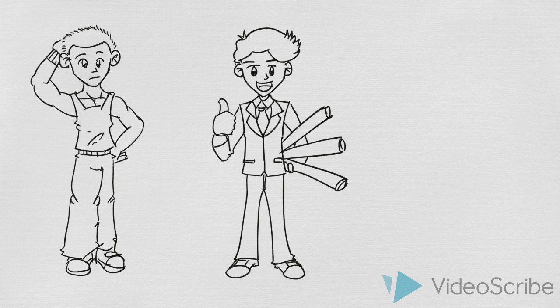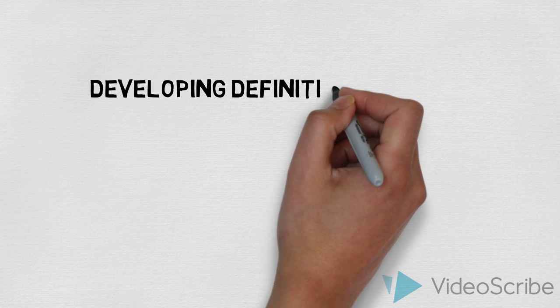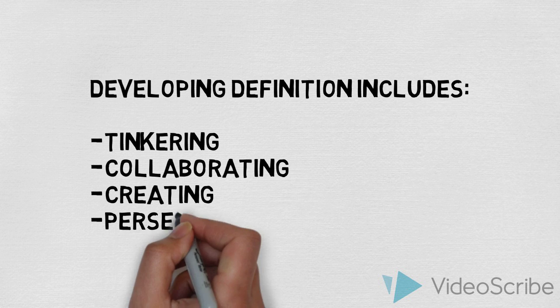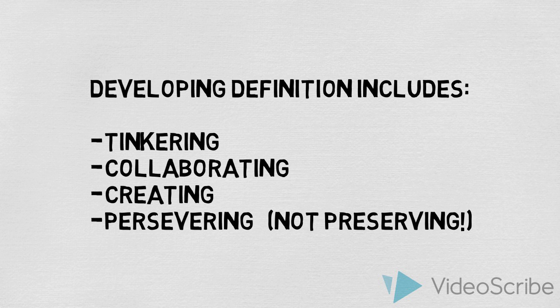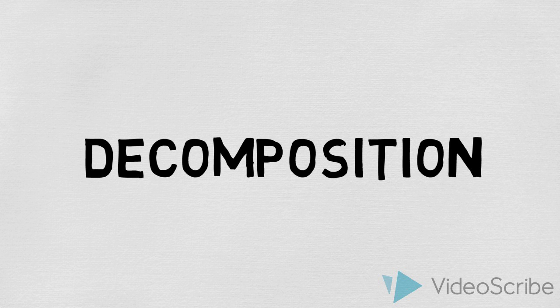In contrast to Google's model of computational thinking, Barry provides a developing definition that includes tinkering, collaborating, creating, and persevering. However, for simplicity, Google's model will be used.